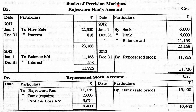In the books of Precision Machines Limited (the vendor), the important accounts are the Hire Purchaser Account (Rajeshwaru Rao's account) and the Repossessed Stock Account. First year journal entry: Hire Purchaser Dr. to Hire Sales — ₹22,350. Down payment received: Bank Account Dr. to Rajeshwaru Rao — ₹6,000. Interest due: Hire Purchaser Dr. to Interest (Rajeshwaru Rao's account) — ₹818.